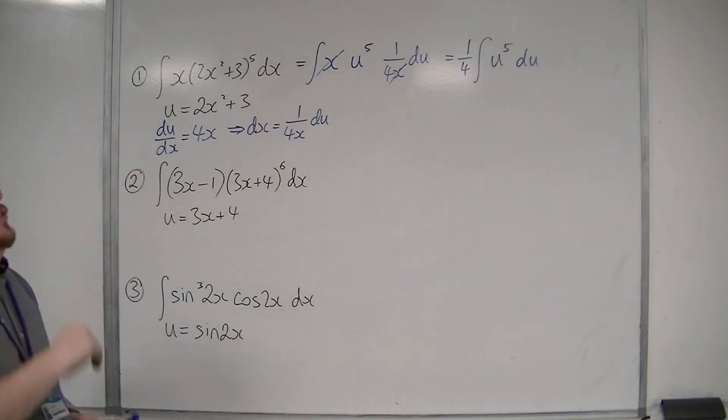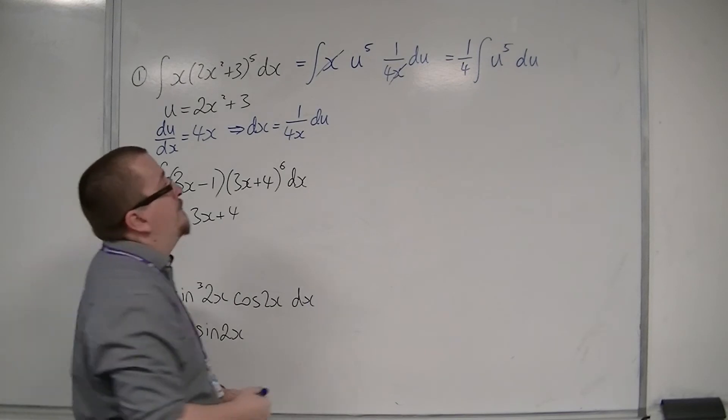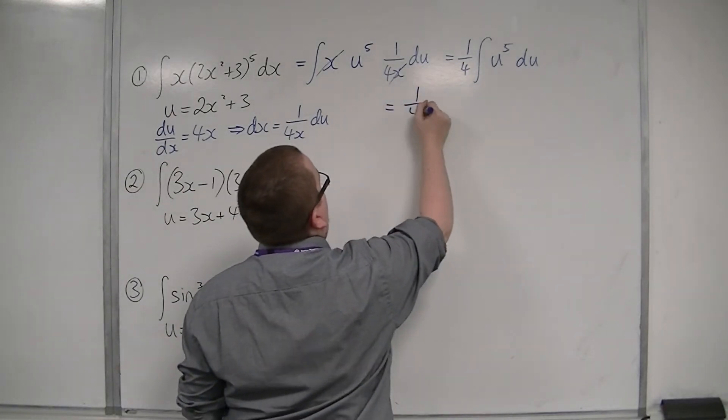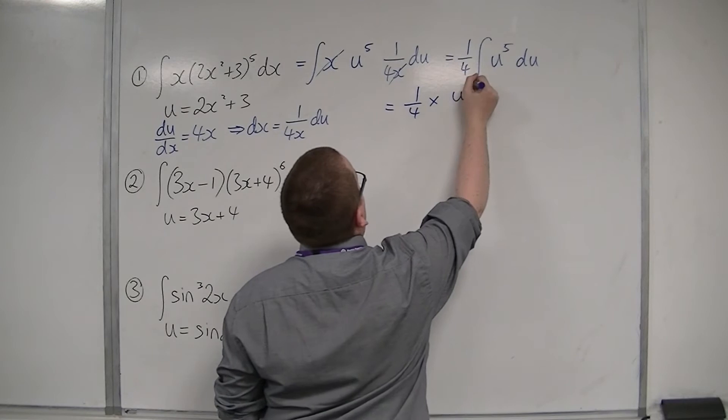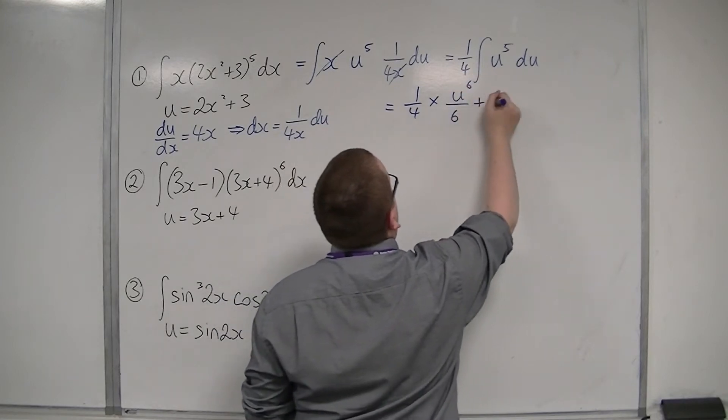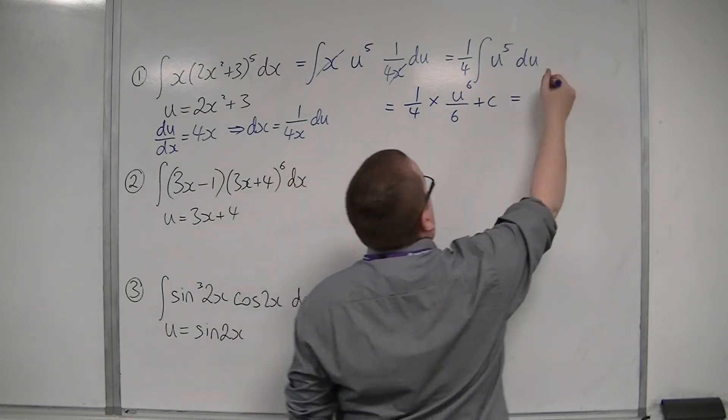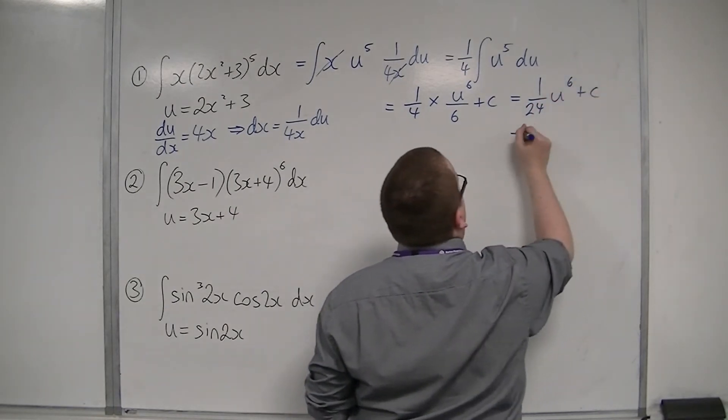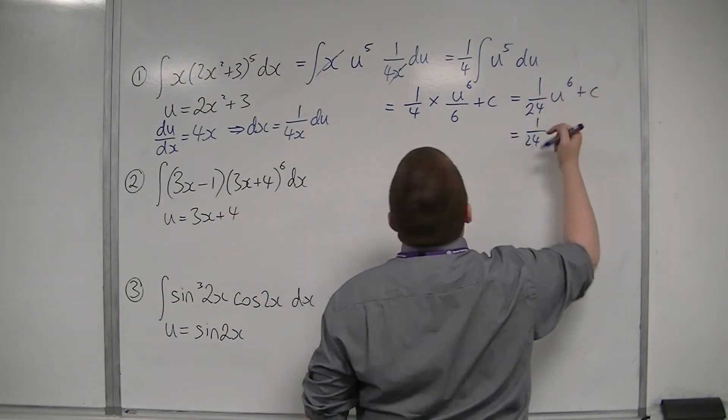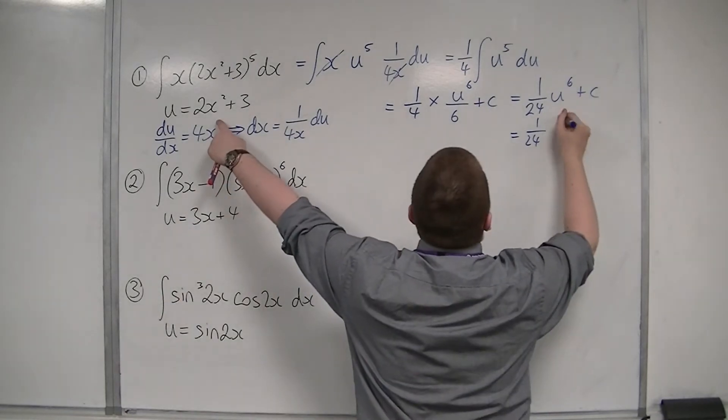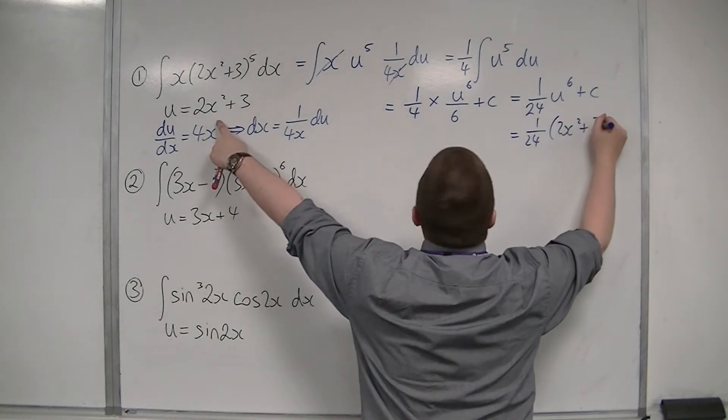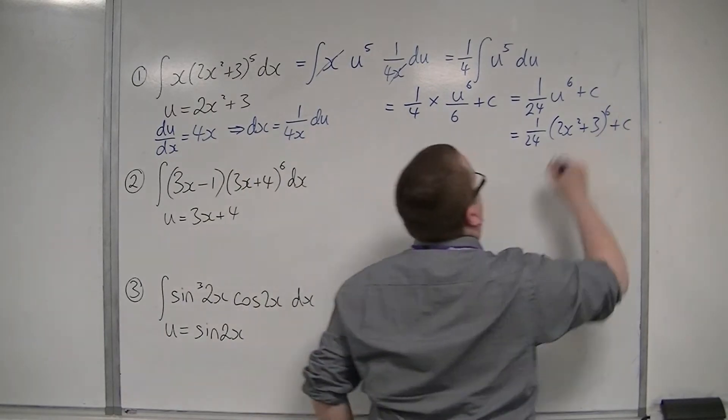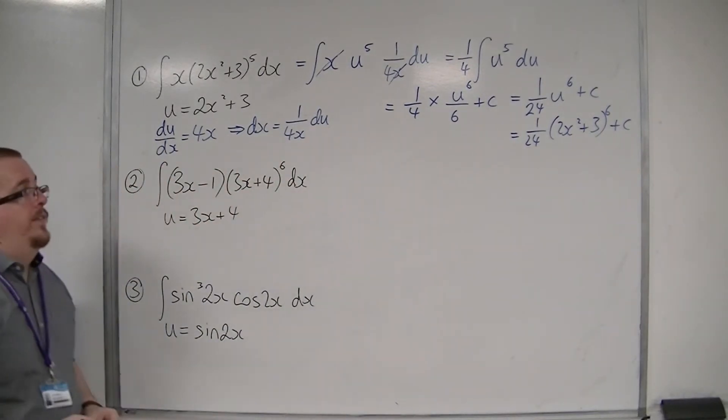So we've got 1/4 integral of u⁵ du. So then I can integrate that, add 1 to the power, divide by the new power. So I've got 1/24 u⁶ plus c. And I don't want to leave it like that, so I bring back the u, so the 2x²+3, all to the power of 6, plus c. And that is my final answer for that one.